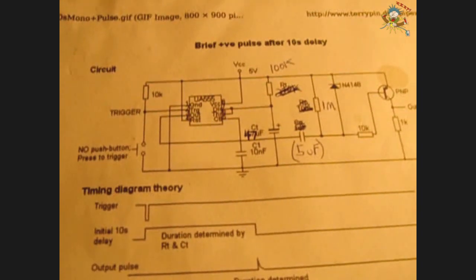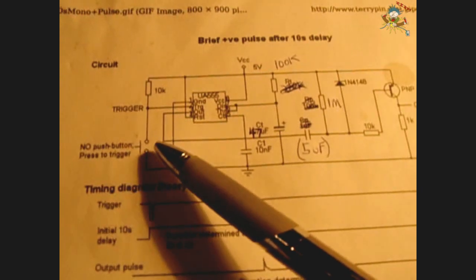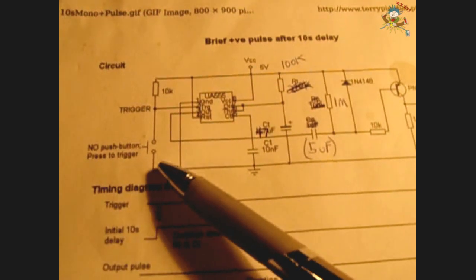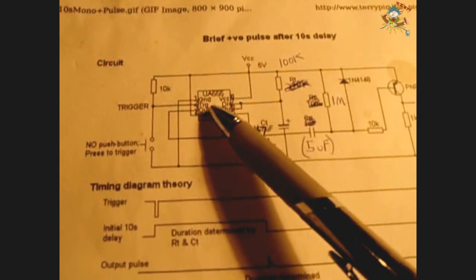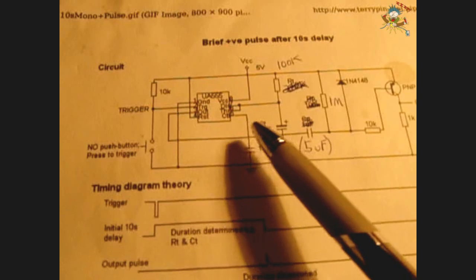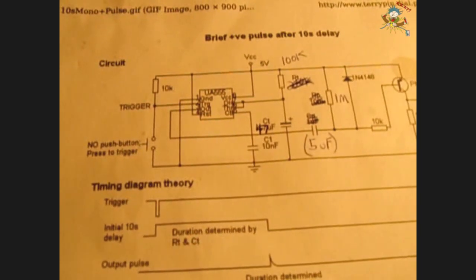Now the circuit gets triggered when you push this momentary switch right here. It's normally open. When you push it in, pin 2 goes to ground. Once that goes to ground, the countdown begins. Once the duration has passed, a pulse will be delivered to this transistor to allow power to flow momentarily.